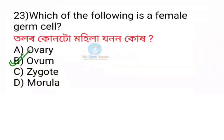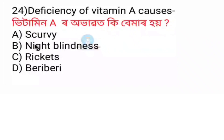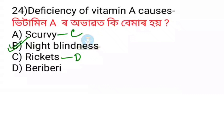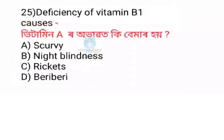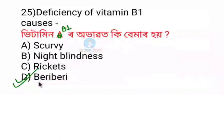Deficiency of Vitamin A causes night blindness. Deficiency of Vitamin C causes scurvy. Deficiency of Vitamin D causes rickets. Deficiency of Vitamin B1 causes beriberi. These are very important questions.